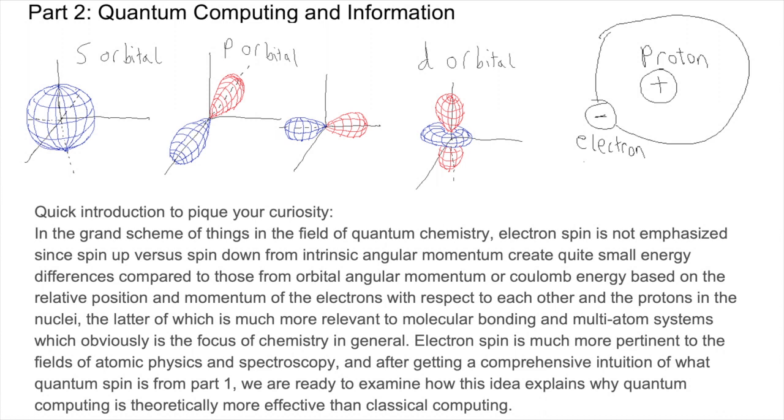In the grand scheme of things in the field of quantum chemistry, electron spin is not emphasized since spin up versus spin down from intrinsic angular momentum create quite small energy differences compared to those from orbital angular momentum or Coulomb energy based on the relative position and momentum of the electrons with respect to each other and the protons in the nuclei. The latter is much more relevant to molecular bonding and multi-atom systems, which is the focus of chemistry in general.